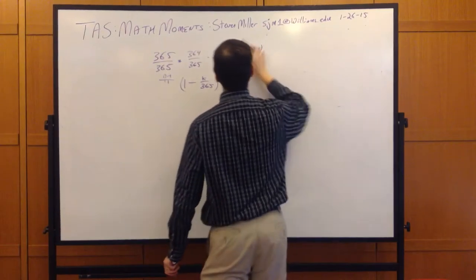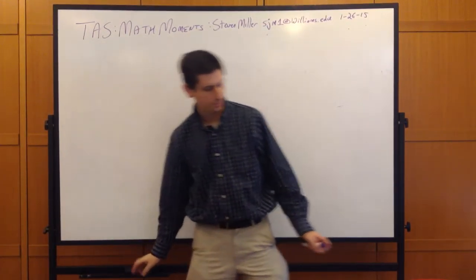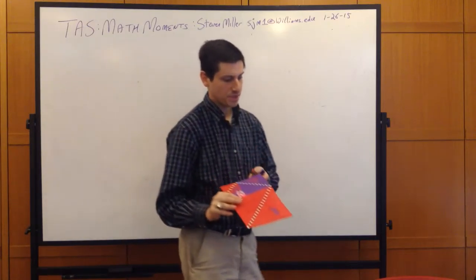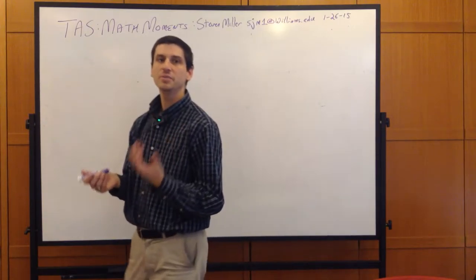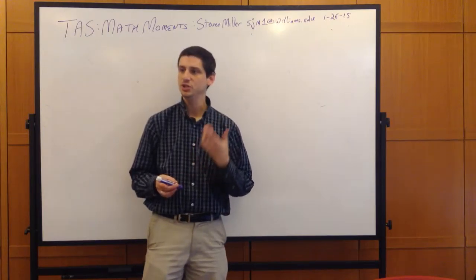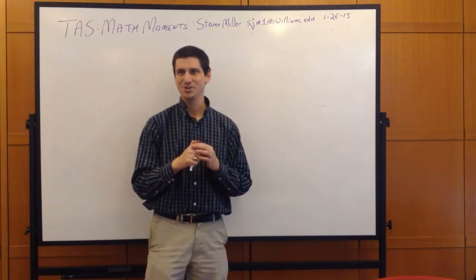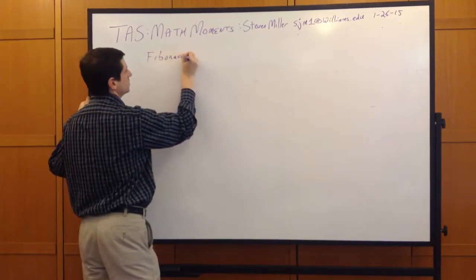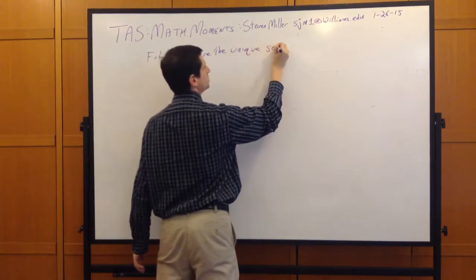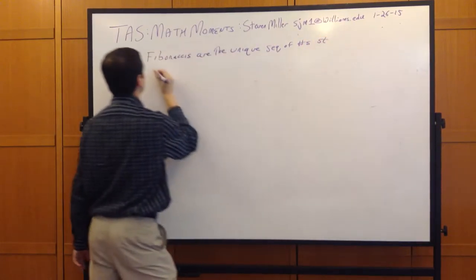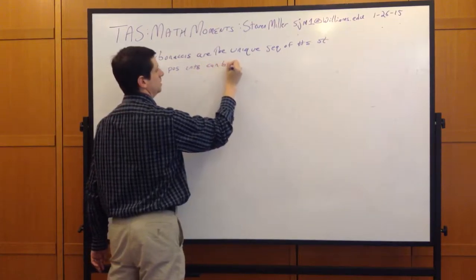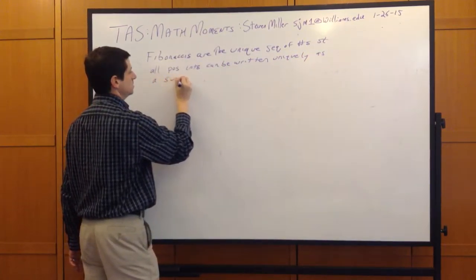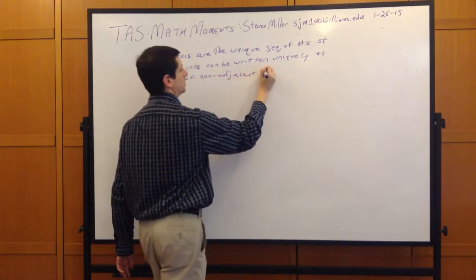There's another way of defining the Fibonacci numbers: they are the unique sequence of positive integers such that every positive integer can be written uniquely as a sum of non-adjacent Fibonacci numbers. So the sequence 1, 2, 3, 5, 8, ... has the property that all positive integers can be written as a sum of non-adjacent terms.